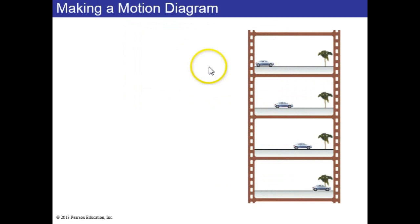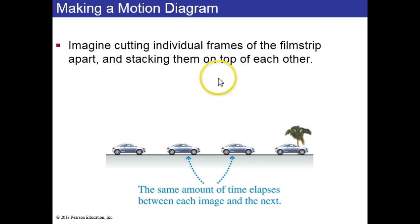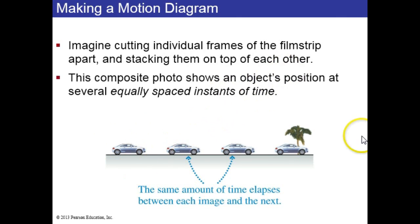So how do we make a motion diagram? Well, first think about an old style movie of a moving object. Each separate photo is called a frame and the car here, since it's moving, is in a different position in each frame. Now imagine cutting up the individual frames and stacking them on top of each other. This composite photo shows the object's position at several equally spaced instances of time. The car is moving so you see four cars. The palm tree is not moving so you just see it sitting there. This is called a motion diagram.